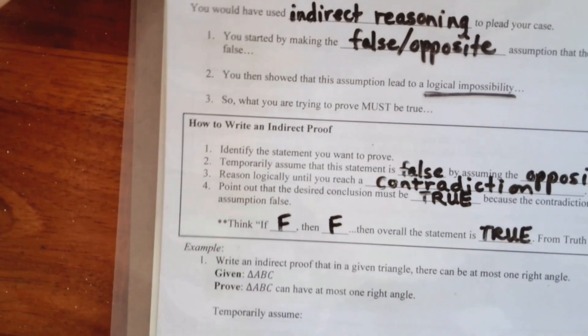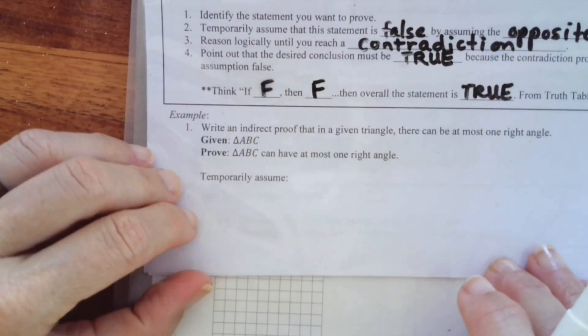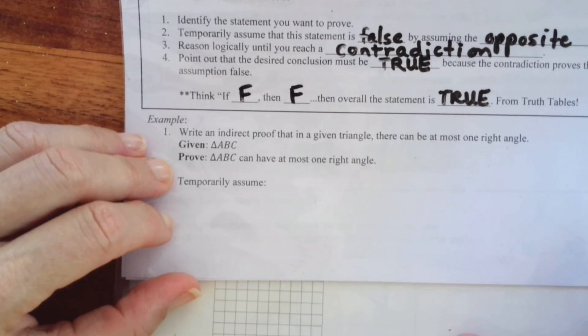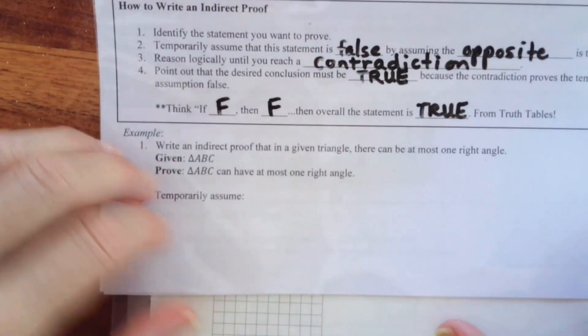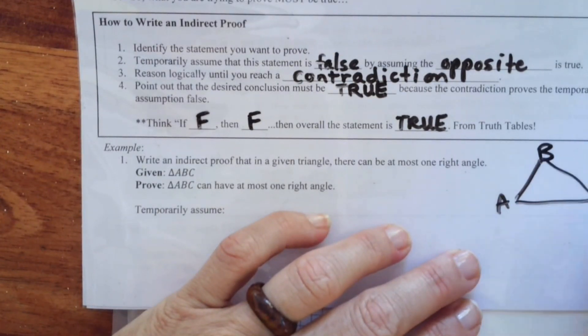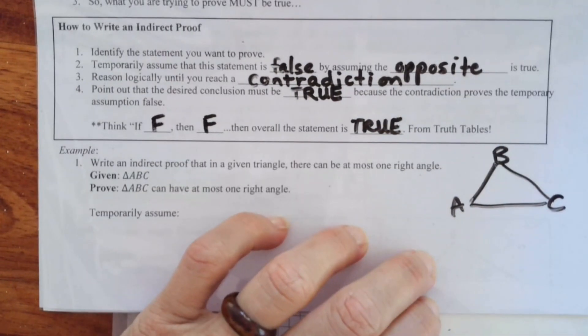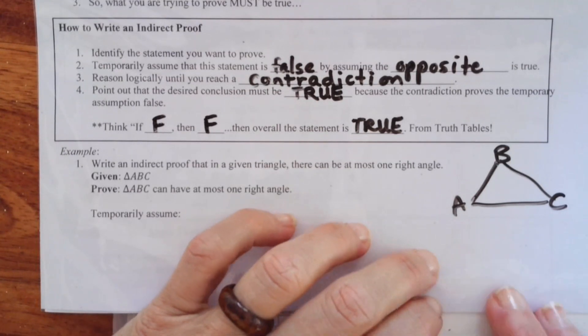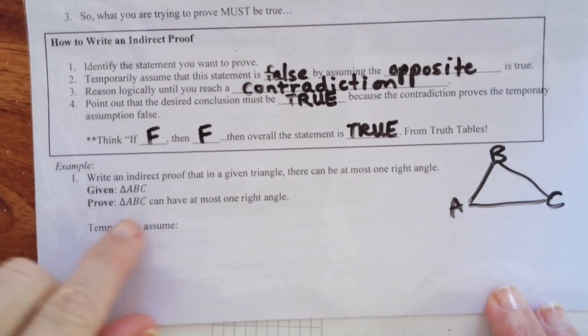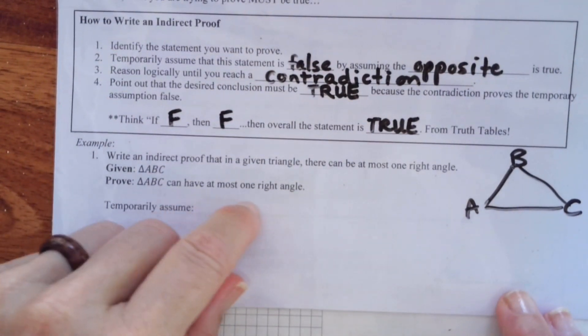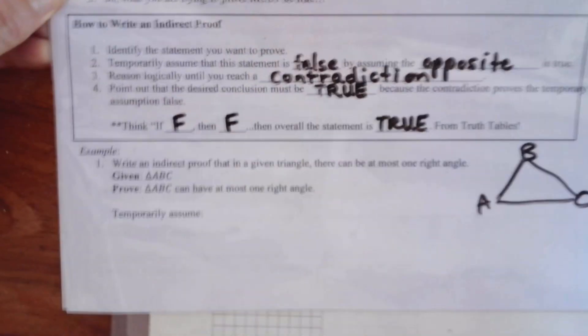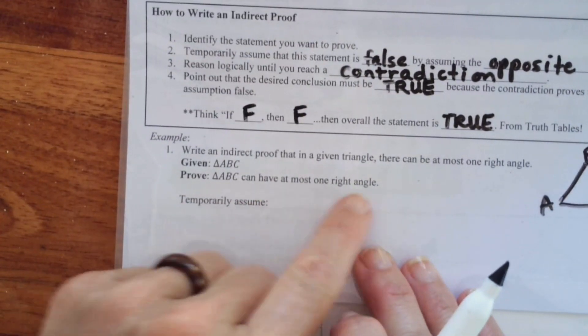So, here's an example. We're going to write an indirect proof that in a given triangle, there can be at most one right angle. And you're given a triangle. So, you're given a triangle. Let's say A, B, C. Now, we're going to do a little paragraph proof. We're just going to talk through this. But, if I want to show that A, B, C can have at most one right angle, then I'm going to assume temporarily that that is not true.